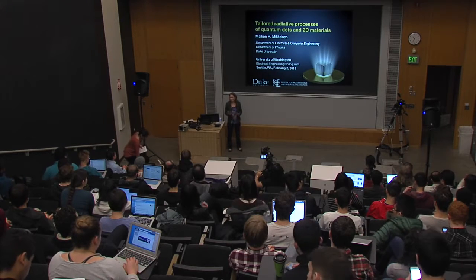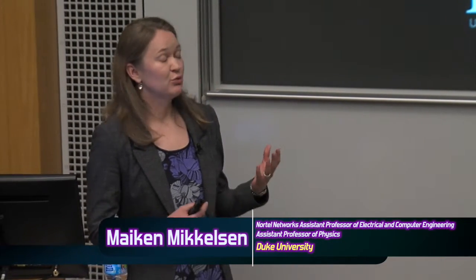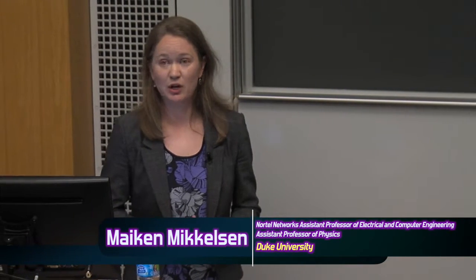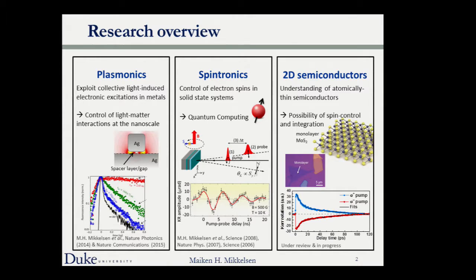Thank you so much for the introduction and thanks for the invitation to visit here. Today I will tell you about some of the recent work from my group at Duke — in particular how we can tailor radiative processes of quantum dots and 2D materials using plasmonic structures. We work on plasmonics utilizing collective oscillations of free electrons to enhance light-matter interactions at the nanoscale, spintronics using electron spin control as a qubit, and 2D semiconductor materials with interesting optical selection rules.